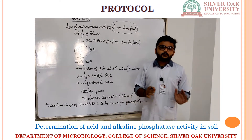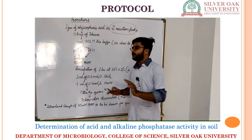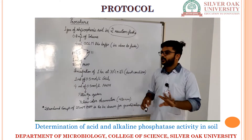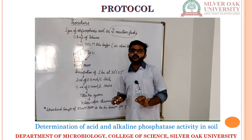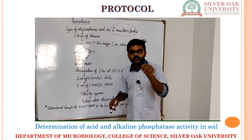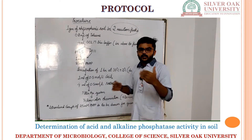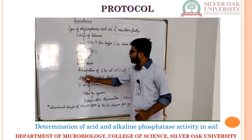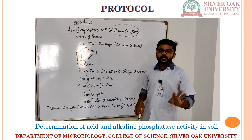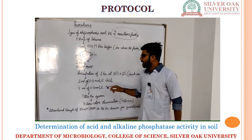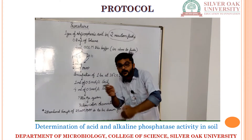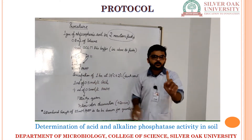After that, we will put both of the flasks in incubation in dark condition for one hour at 37 degrees Celsius — or in other words, at room temperature. In this incubation period, phosphatase will be carrying out its activity and we will be analyzing that activity. After 1 hour of incubation, we will add 1 ml of 0.5 mol per litre CaCl2 and 4 ml of 0.5 mol per litre NaOH. Both of these solutions will inhibit the phosphatase activity after 1 hour.